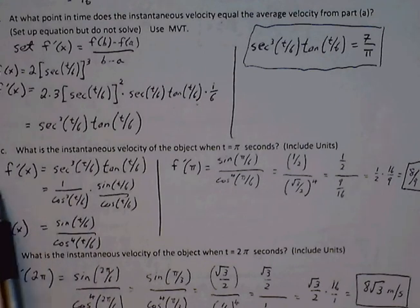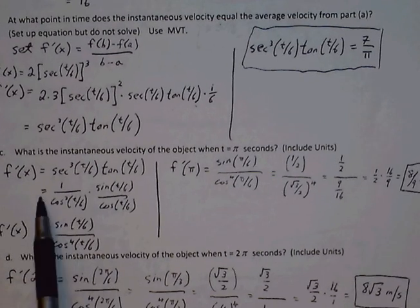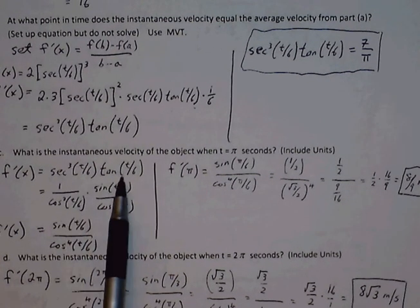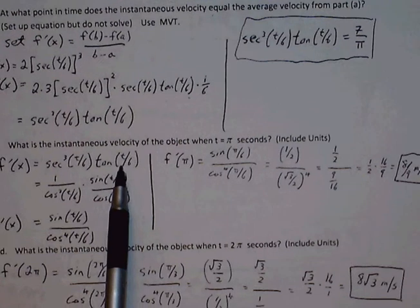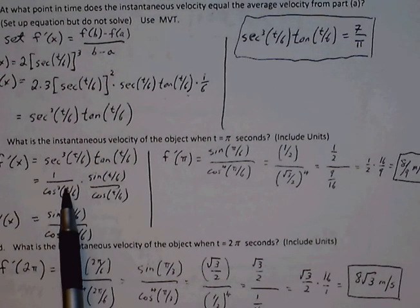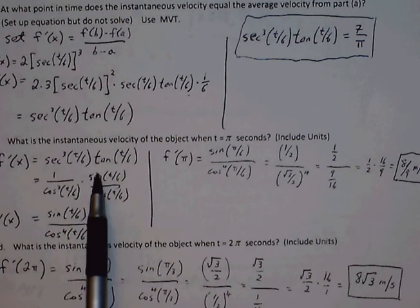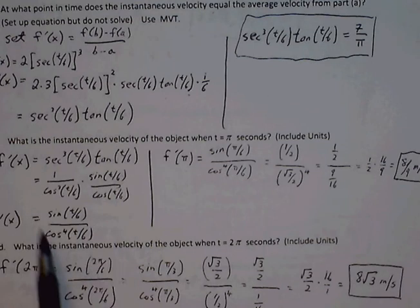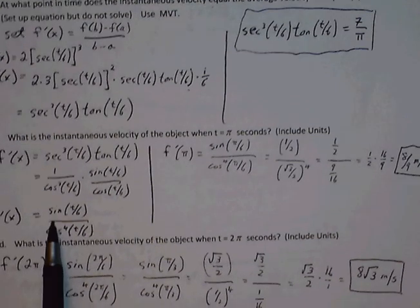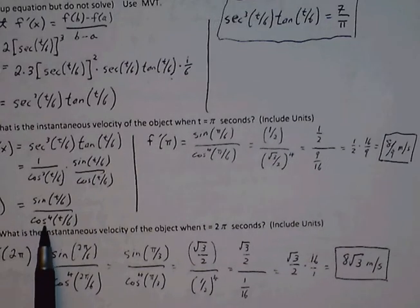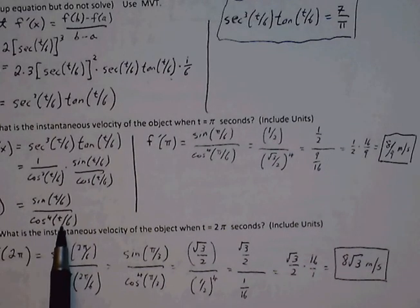And then the derivative, that value that is given back, is simply just going to be the velocity. So we plug pi in for t. Well, first, I'm going to change everything to be in terms of sine and cosine here. So secant cubed becomes 1 over cosine cubed. Tangent is simply sine over cosine. And I'm going to rewrite my derivative as sine of t over 6 over cosine t over 6 to the 4th.